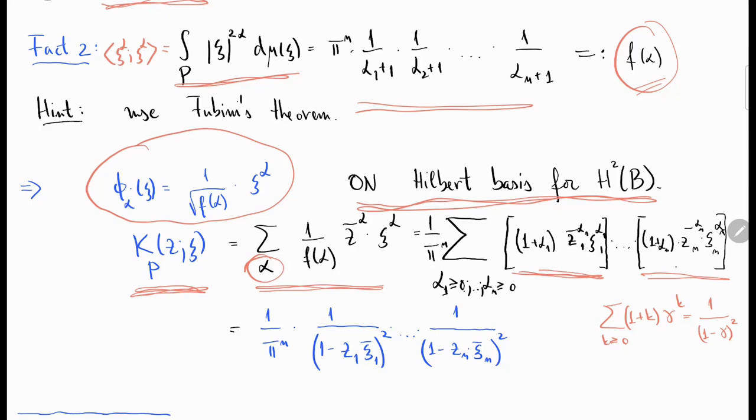You've seen this before, this is nothing but one over one minus gamma squared. Then what do I have here? I have this whole sum which is nothing but this thing here times the same expression for z2 times all the way to the same expression for z to the n. Of course I also have this one over pi to the n. I keep that in front and then I have this nice formula for the Bergman kernel of the polydisc.